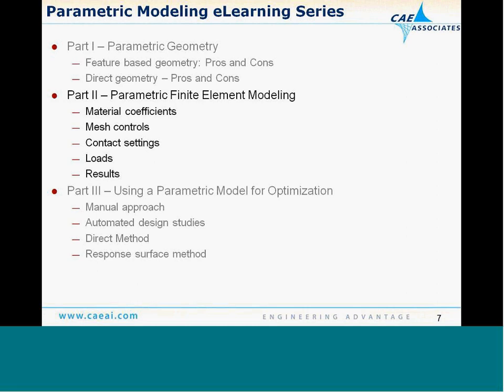This webinar today is part two of a three-part series on parametric modeling. In part one, we discussed parametric geometry from both a feature-based and direct geometry tool standpoint — that recording is available on the YouTube channel. Today we'll be talking about setting up the finite element model in the ANSYS Mechanical tool, as well as the parameter set in the Workbench project. Stay tuned for part three, where we'll take both parts and wrap that under the optimization umbrella using the Design Explorer tool.